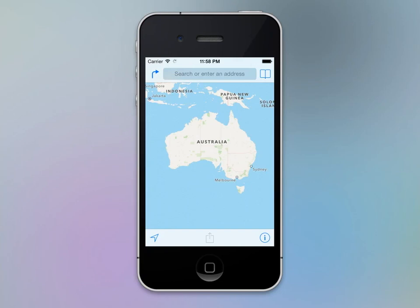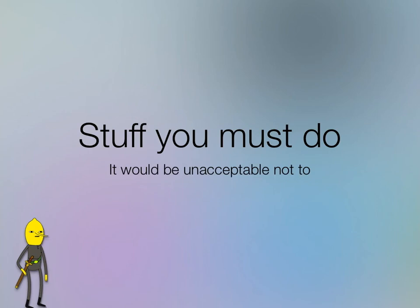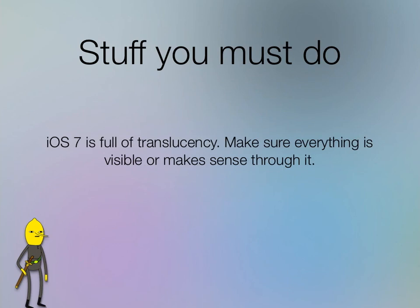Now let's look at things you must do when building for iOS 7. The first is translucency. You need to make sure all your app's content is discernible through the weird translucent UI elements iOS 7 has put everywhere — bars, keyboards, control center, the status bar. Everything is transparent in iOS 7. If you don't think about that, you'll end up with something that looks horrific when you have a weird color underneath and then something slides up and you've got an orange blurry thing.